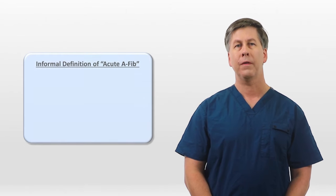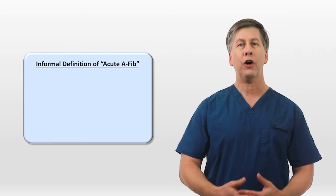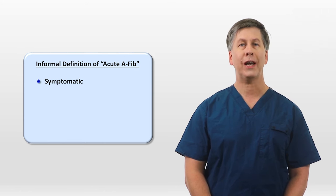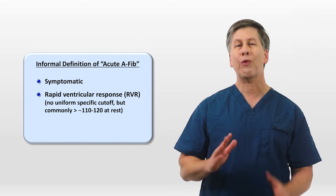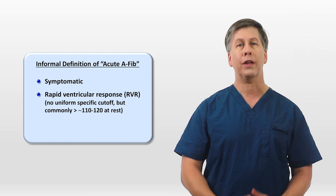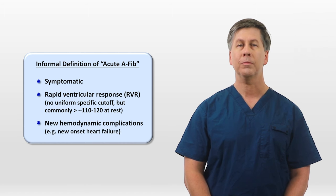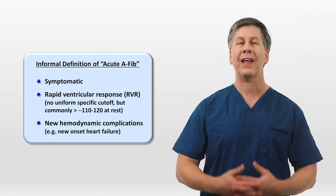The first thing to discuss is what exactly I mean by acute AFib. This is not a formal designation, but I would consider any of the following situations to fall into this category: AFib that's symptomatic, AFib that's associated with a rapid ventricular response, also known as RVR — commonly rates greater than around 110 to 120 while at rest receive the RVR label — and AFib with new hemodynamic complications, such as new onset heart failure. In short, acute AFib is any presentation of AFib that lands a patient in the ER.